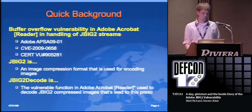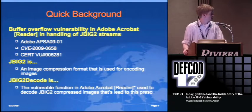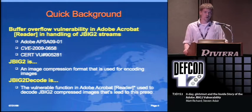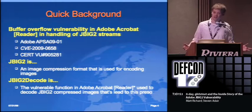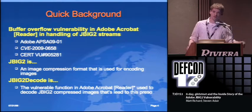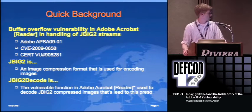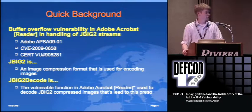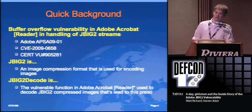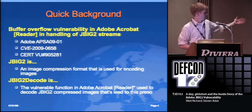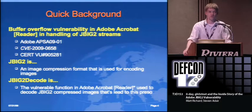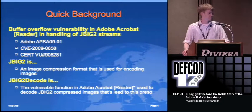Quick background for those who don't know what's going on. We're talking about the Adobe vulnerability in Adobe Acrobat and Acrobat Reader - Adobe's first Product Security Advisory of this year. JBig2 is an image compression format used for coded images. A lot of times you get a PDF with a scanned fax or black and white image, and JBig2 really decreases the size. The JBig2Decode function in Adobe is the vulnerable function that resulted in this pretty bad exploit.